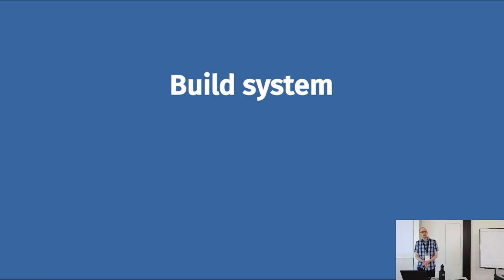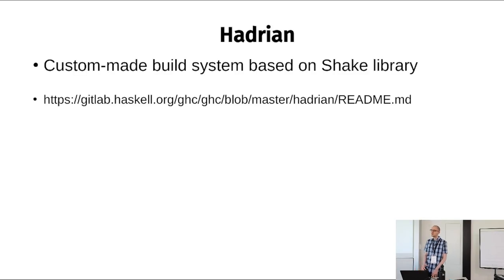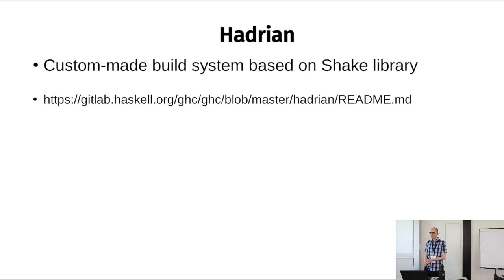Now let's get into the build system. GHC uses its own build system, very much unlike Cabal or Stack which you'd use for most Haskell projects. Its build system is large and sophisticated enough to have its own name: it's called Hadrian, and it's based on the Shake library. The build system itself is also built on top of Haskell. Most of what I'll show here is taken from the Hadrian readme, which is a very good reference for questions about how Hadrian works.